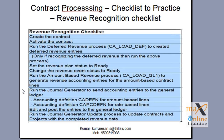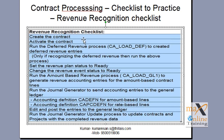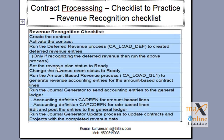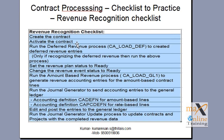So similarly, the initial part of the steps is the same — setting up the proper distribution, the set of tables, and then create the contract and activate the contract. Then run the deferred revenue process. Once you set the revenue plan status to ready, run the deferred revenue process — do you have any deferred lines within the contract? Then set the revenue plan status to ready.